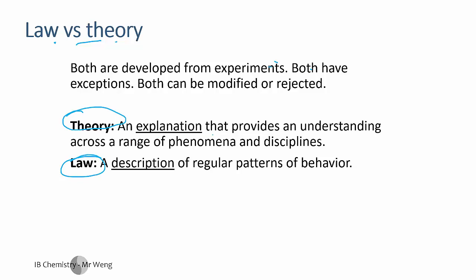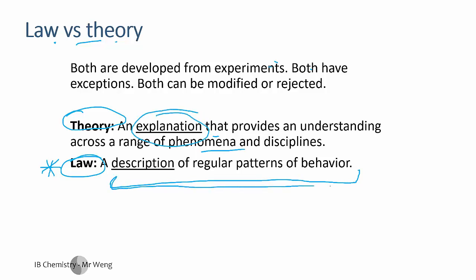A theory just explains something that happens. A law is a lot more solid — it's a description of what actually happens, whereas a theory is just the explanation. The law is pretty much always correct because it's something that happens; you're just stating a fact, like gravity. The theory is the one that can be a little bit dodgy because it can be completely wrong sometimes.